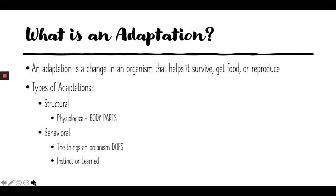There are a couple of different types of adaptations. We have structural adaptations, which are the body parts of the animals. These are physical or physiological, and they involve the body of the animal or plant changing over time to fit in and survive better in its environment. The other type is behavioral adaptations — things that the organism does. They're actions or behaviors, and they can be instinctual or they can be learned.